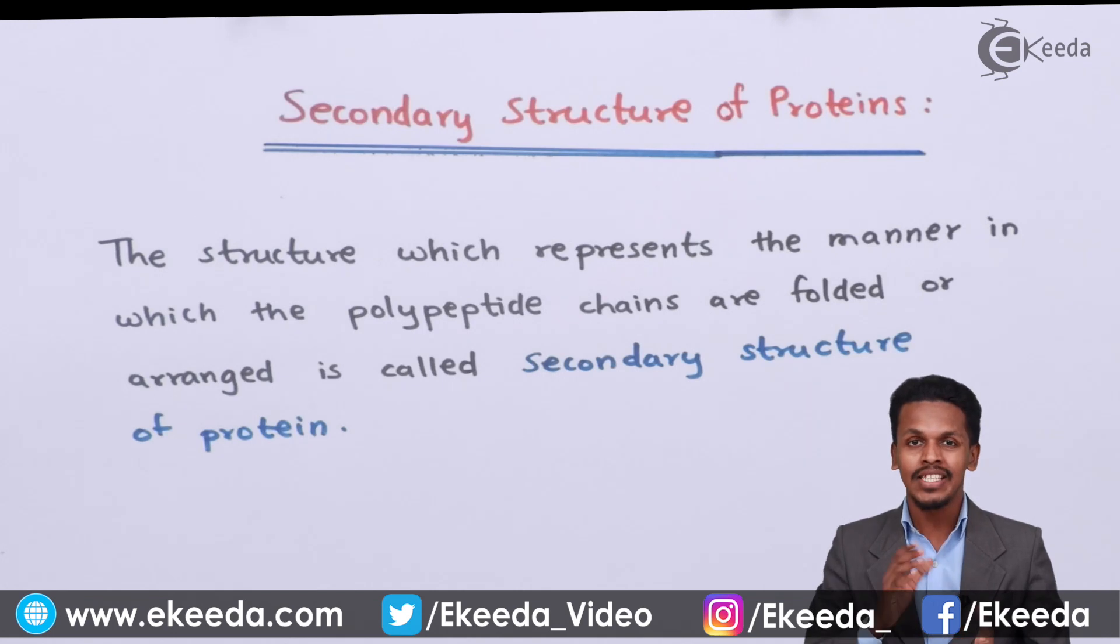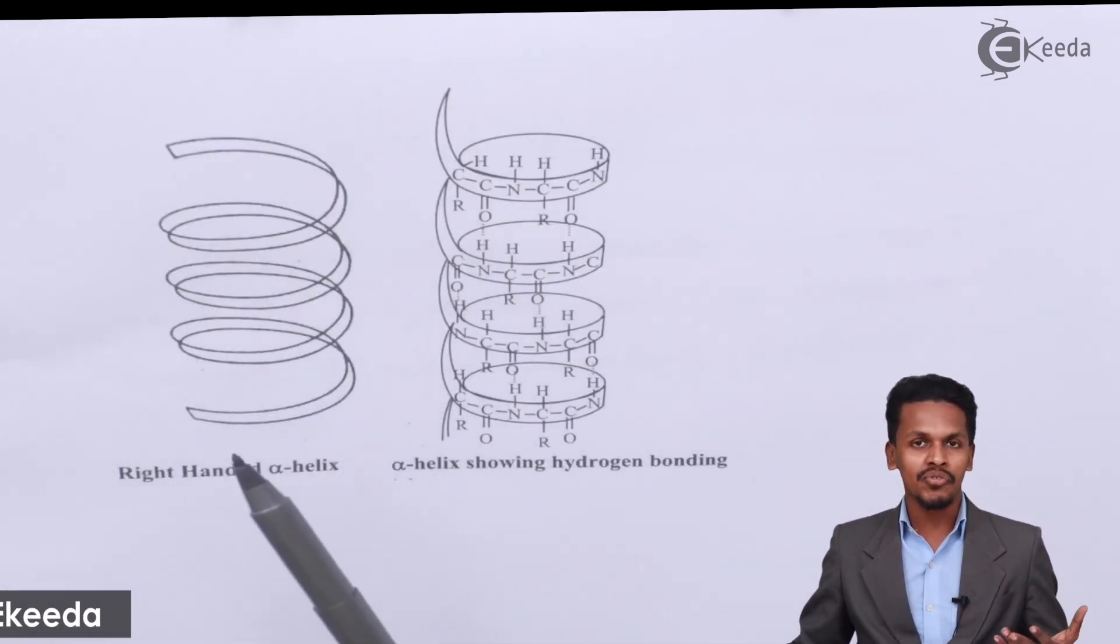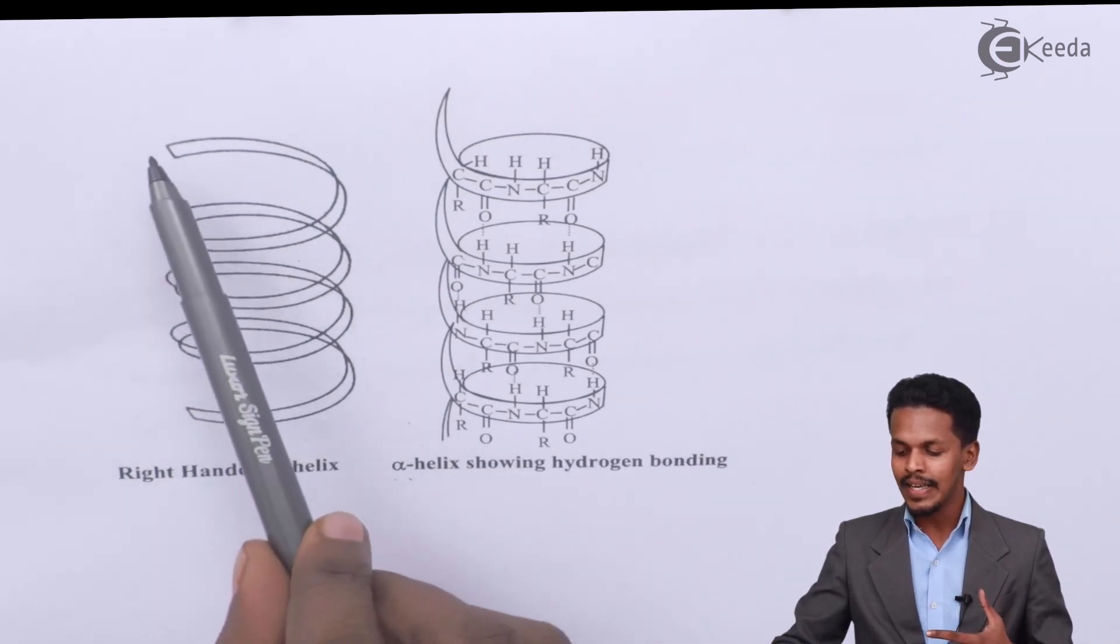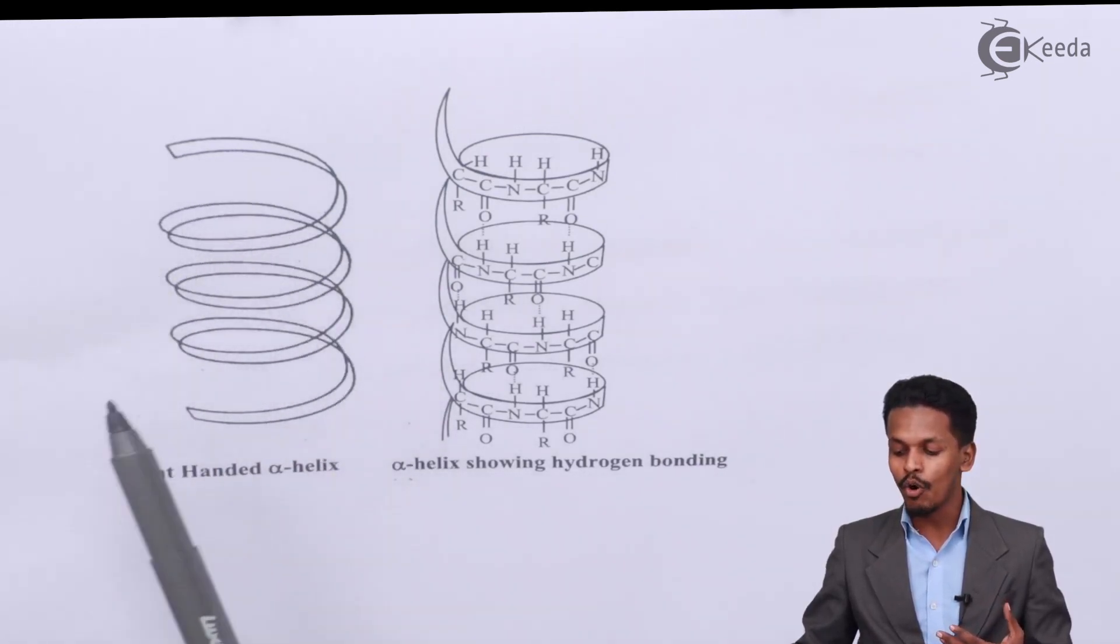So what is alpha helix structure? This is what I'm going to explain. This is a schematic diagram for the alpha helix structure and here you can find that the protein molecules or the polypeptide are getting coiled up over here.